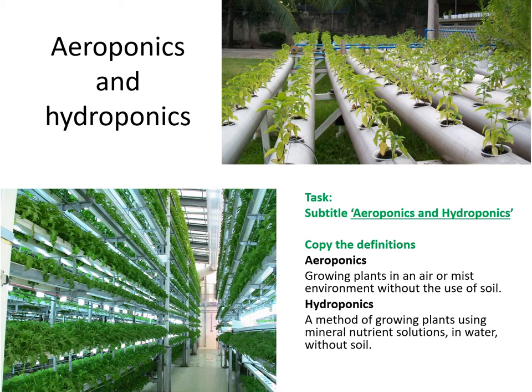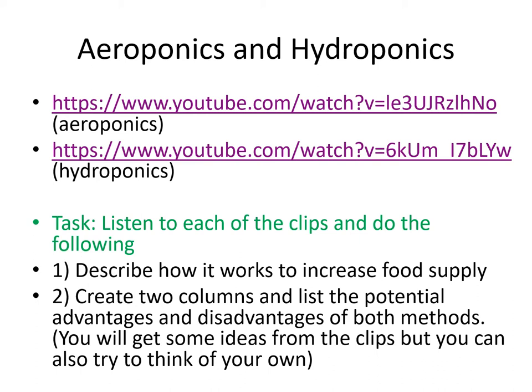Please write the subtitle 'aeroponics and hydroponics' and write down those two definitions — pause this slide and then unpause to move on. Then watch both of the clips linked — they're only a few minutes long each. I want you to describe how it works to increase food supply, and create two columns in your book for advantages and disadvantages. You might think of things yourself as well. If you're really interested, you could do some additional research online. All of my answers will be at the end of this video.